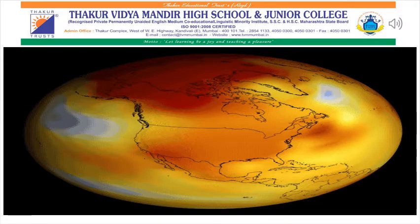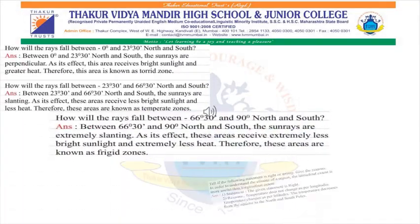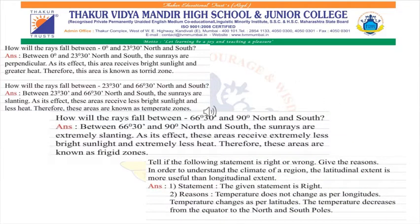Let us revise some questions based on what we have learned. First question: How will the rays fall between 0 degrees and 23.5 degrees north and south? Sun rays fall directly on this area, so they are perpendicular. As an effect, the area receives bright sunlight and greater heat. Therefore, this area is known as the torrid zone or warm zone. Third question: How will the rays fall between 23.5 degrees and 66.5 degrees north and south? The sun rays over this area are slanting. As an effect, this area receives a little less bright sunlight and less heat. Therefore, it is known as the moderate or temperate zone.